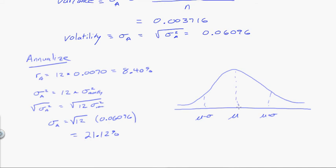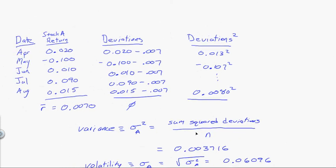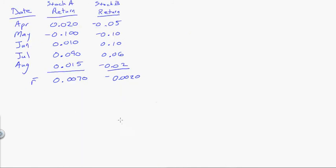Alright, let me do one other thing here. I'm going to go back and get rid of some of this stuff. So I've rewritten this. I have the returns for stock A and the returns for stock B. We've already come up and figured out the annualized returns for stock A is equal to 8.40%, and the standard deviation annualized for stock A is 21.12%. Now I want you to repeat on your own for stock B and see if you can get those numbers.